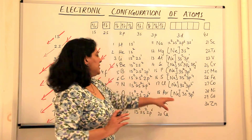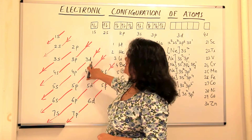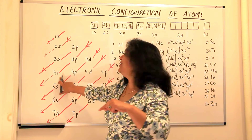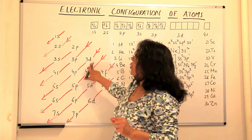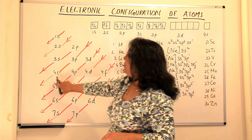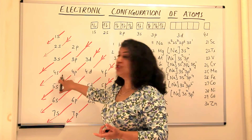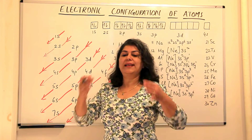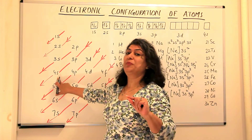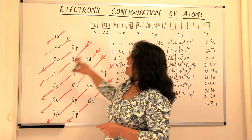The octet rule tells us that although the third shell has 3s, 3p, and 3d orbitals, after 3p it is not 3d that fills up — it is the 4s orbital, which has lower energy than 3d. The reason: the n+l value of 3d is 3+2=5, while the n+l value of 4s is 4+0=4. So although 4s belongs to the fourth shell, quantum mechanics tells us it is not just the principal quantum number but the azimuthal quantum number that decides orbital energy. Therefore, the 4s orbital fills up before 3d.